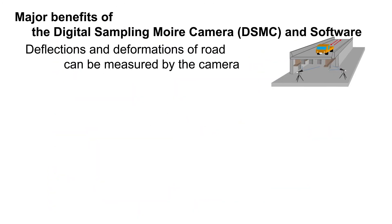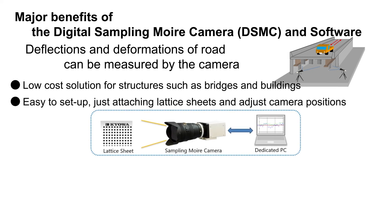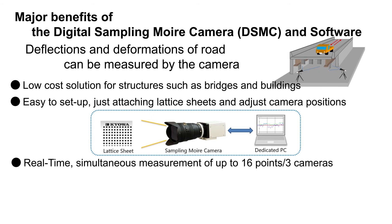Major benefits of the digital sampling camera (DSMC) and software: deflection and deformation of road structures can be measured by the camera. It's a low-cost solution for structures such as bridges and buildings — easy to set up, just attach lattice sheets and adjust camera positions. Real-time simultaneous measurement of up to 16 points with three cameras is possible.